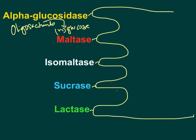There is a medication called acarbose, which inhibits alpha glucosidase enzyme, thereby decreasing the digestion of oligosaccharides in the intestine. Acarbose is used in the treatment of diabetes mellitus — that is an important applied aspect to remember.